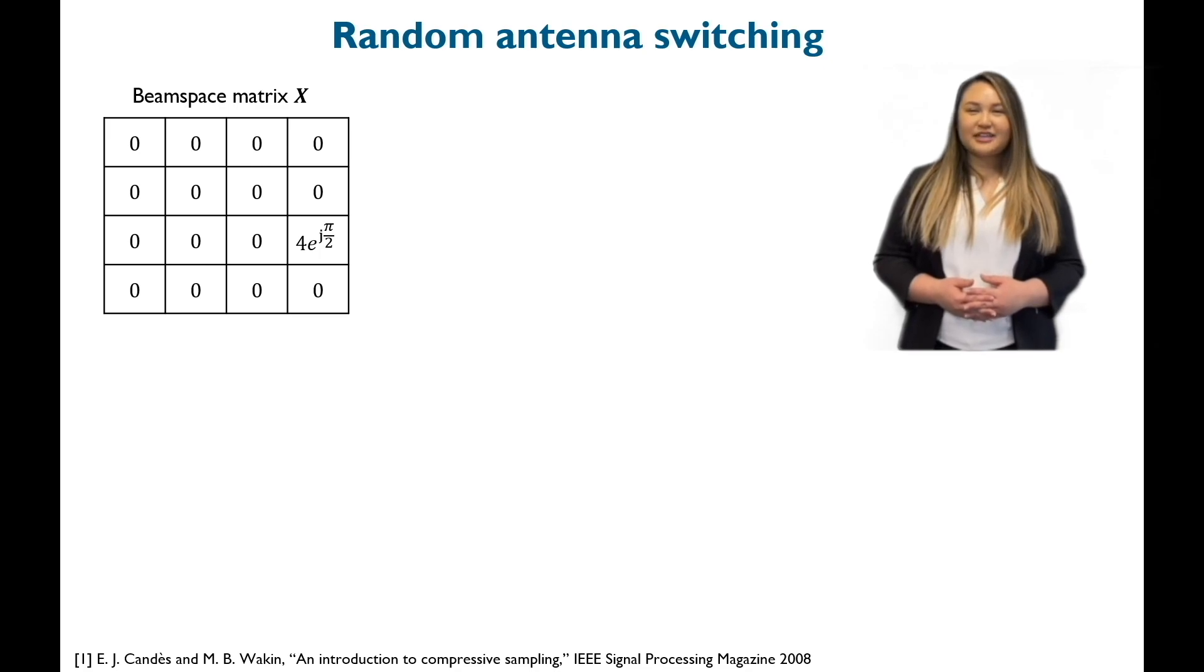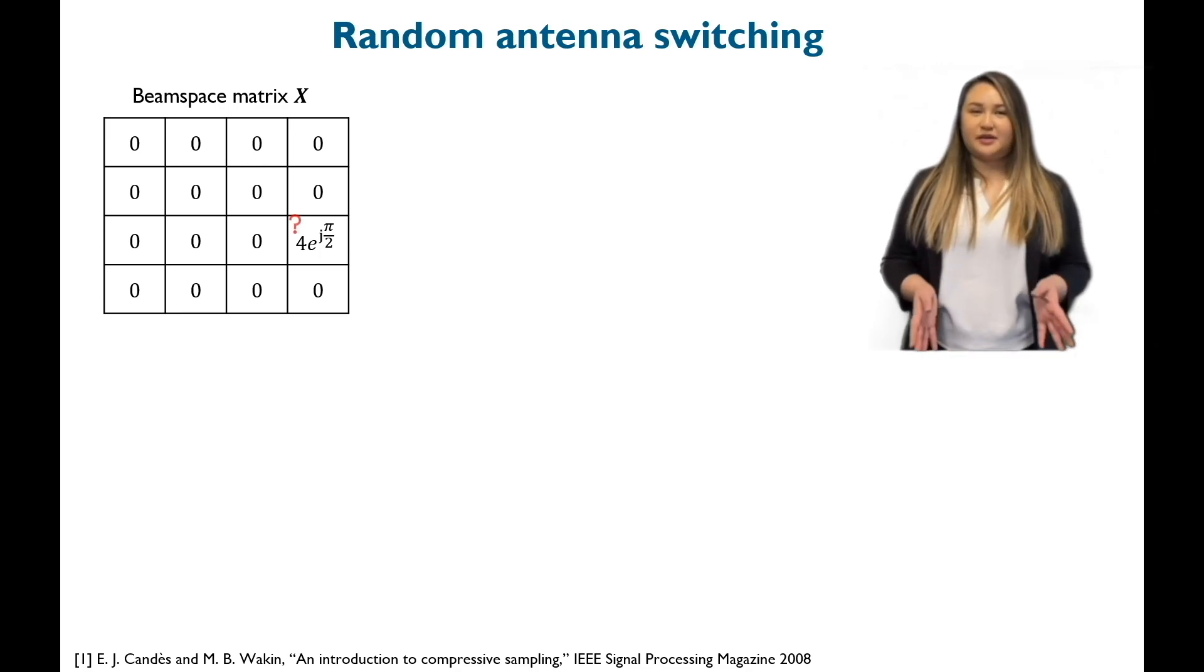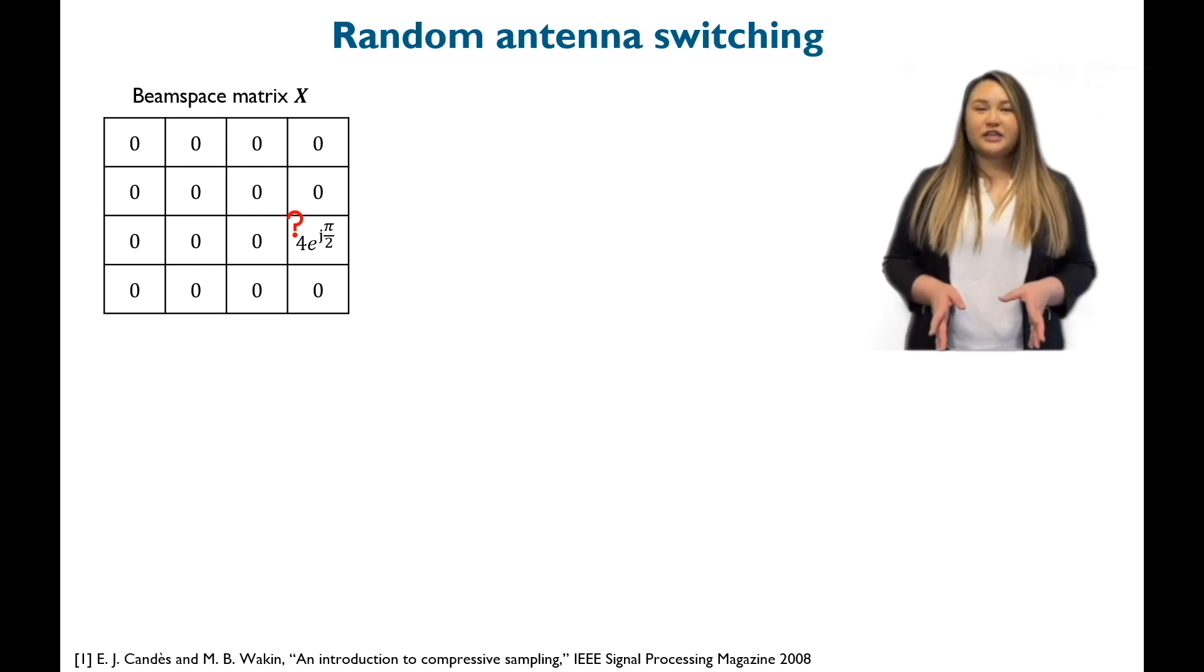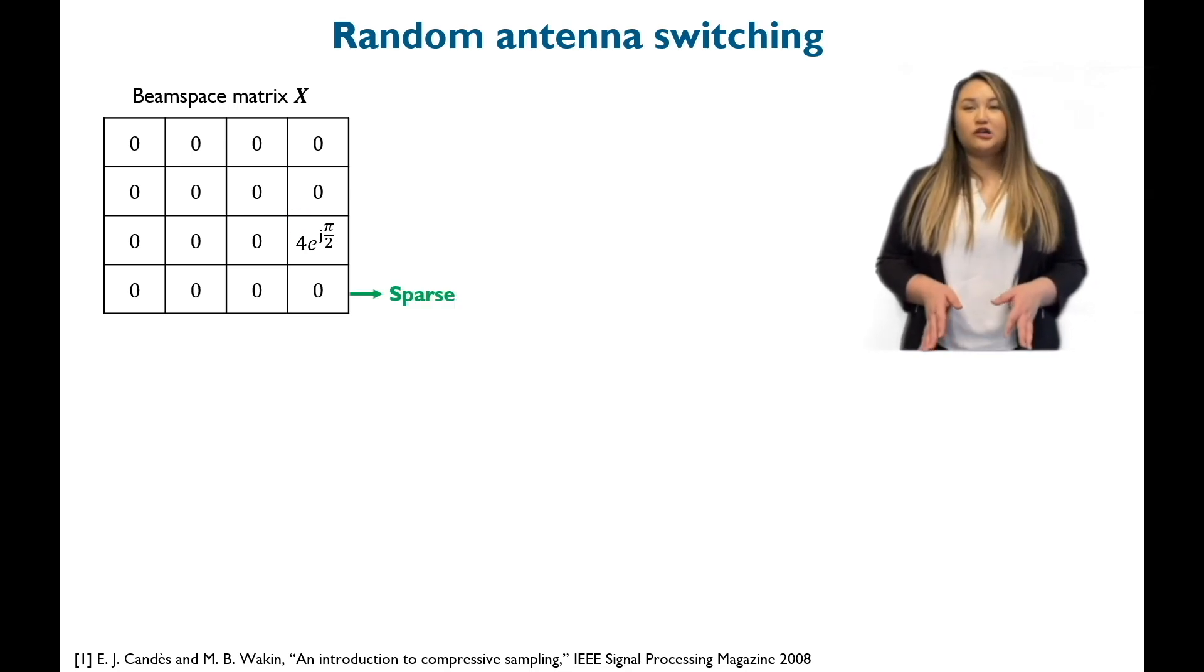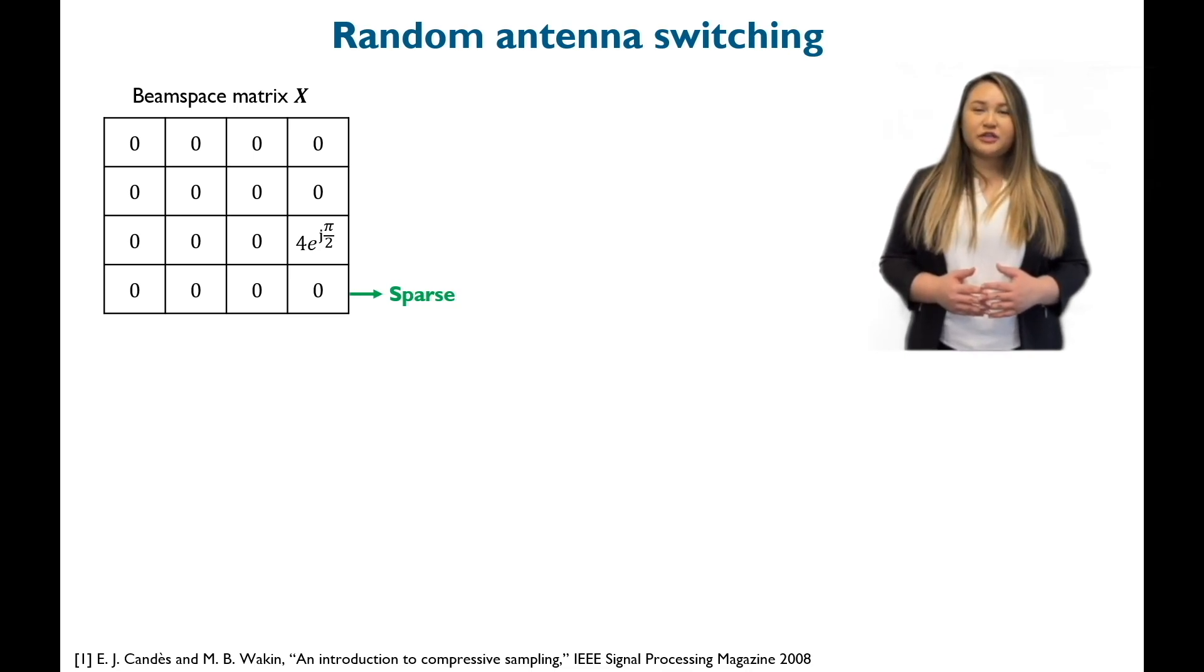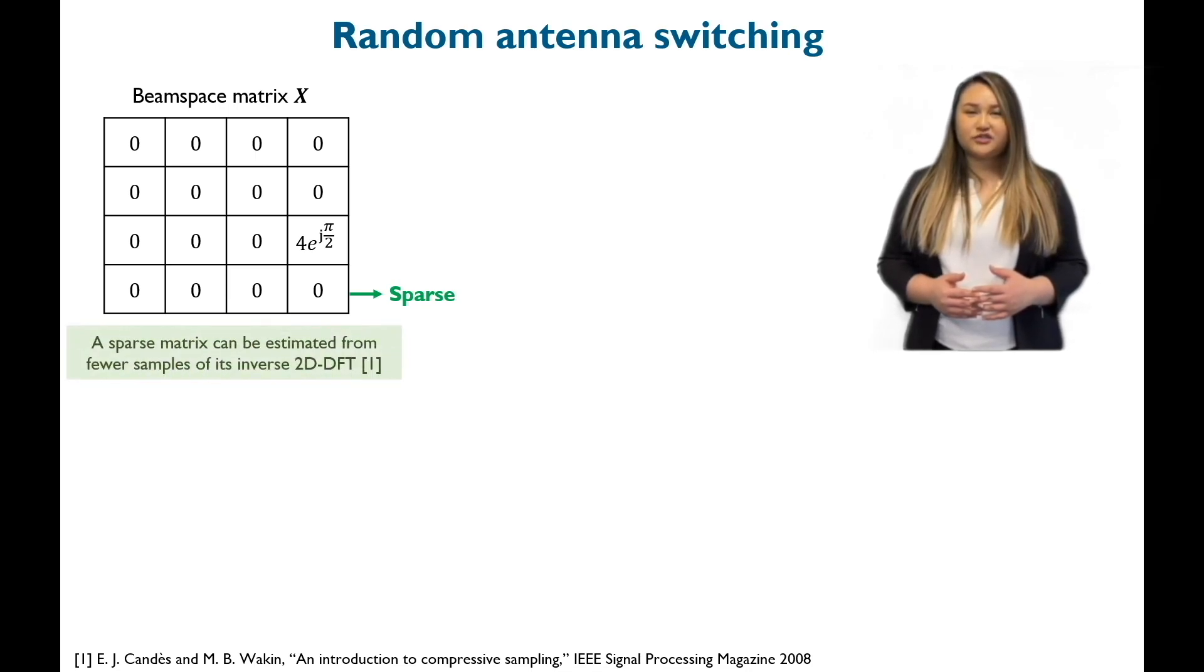Hi, I'm Kayla Tran and I'm going to discuss a smart way to quickly estimate the best beam. Millimeter wave channels exhibit a special property called sparsity. For example, most of the entries in the beam space shown here are zero. Interestingly, such sparse matrices can be recovered from fewer samples of their inverse Fourier transform.